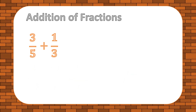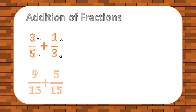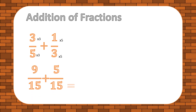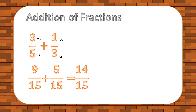Let's try another addition problem. The steps are: first, make both denominators the same; second, add them up; third, convert to the lowest term if needed. In this case, there is no need to convert, as 14 out of 15 is already in the lowest term.